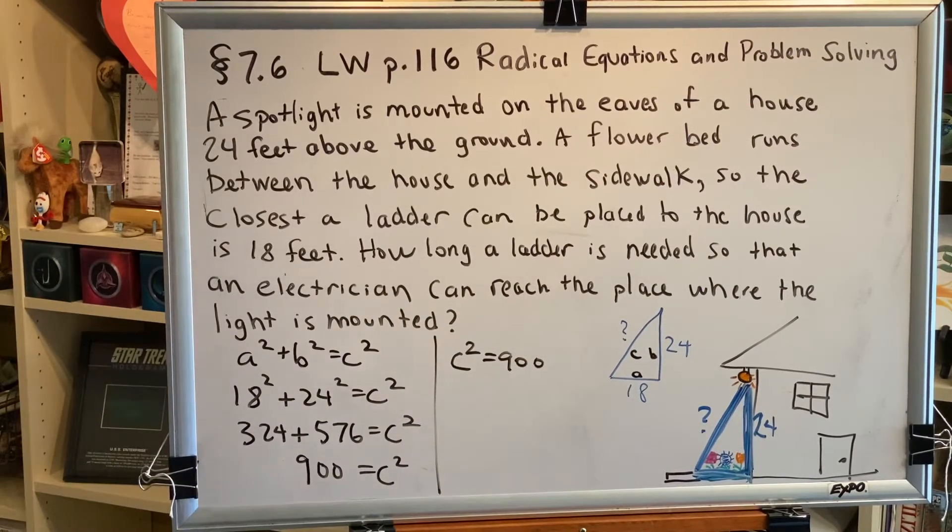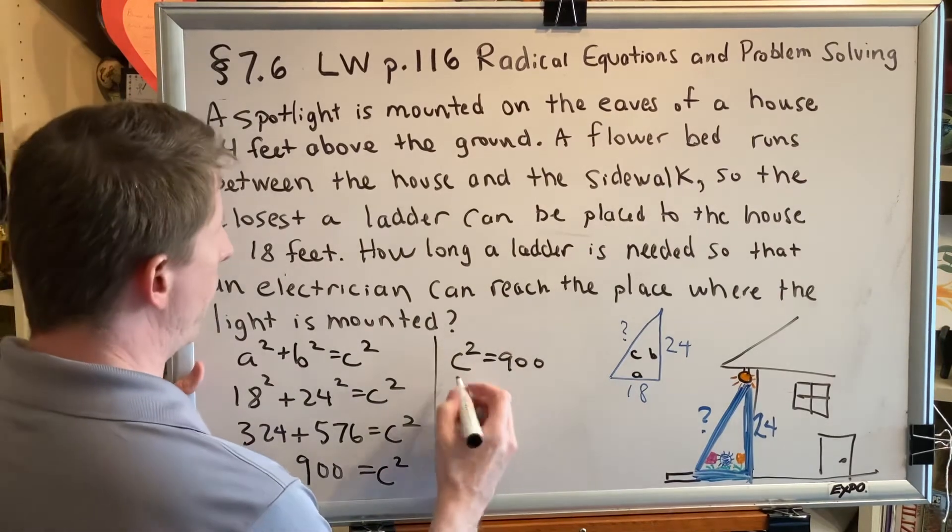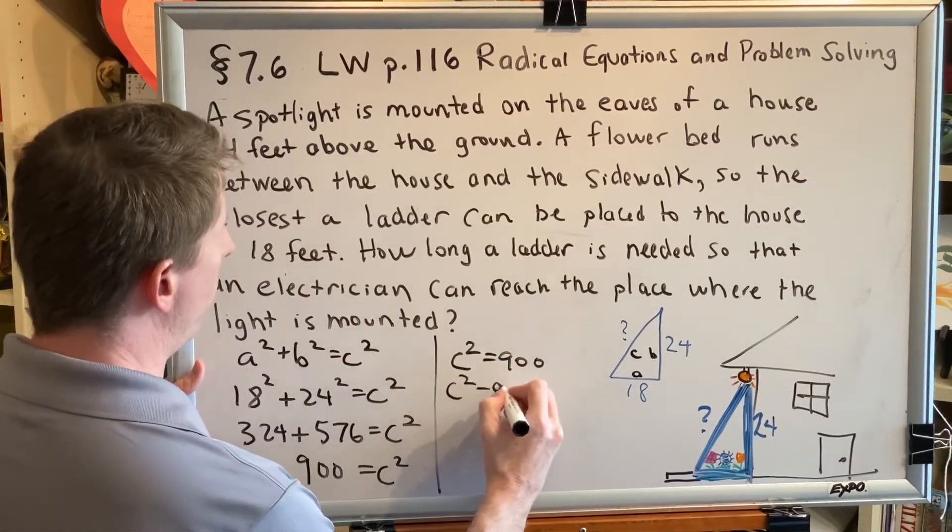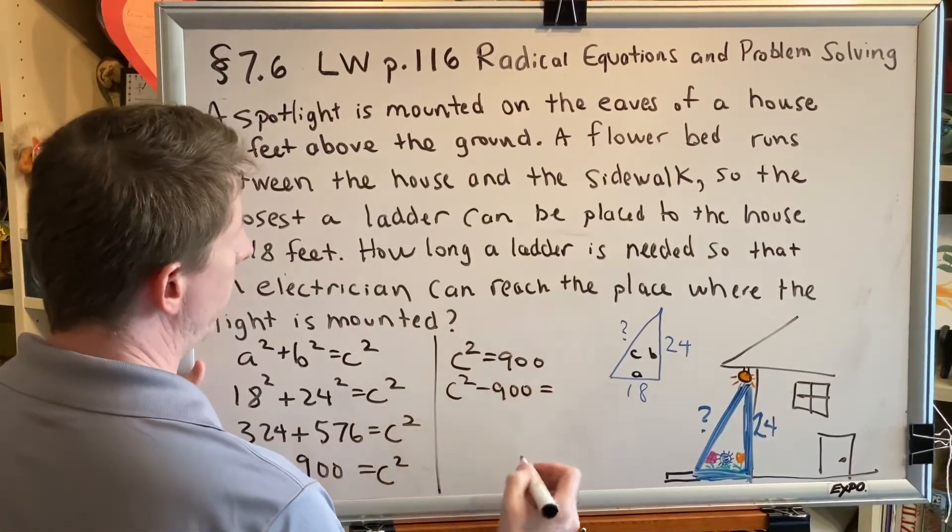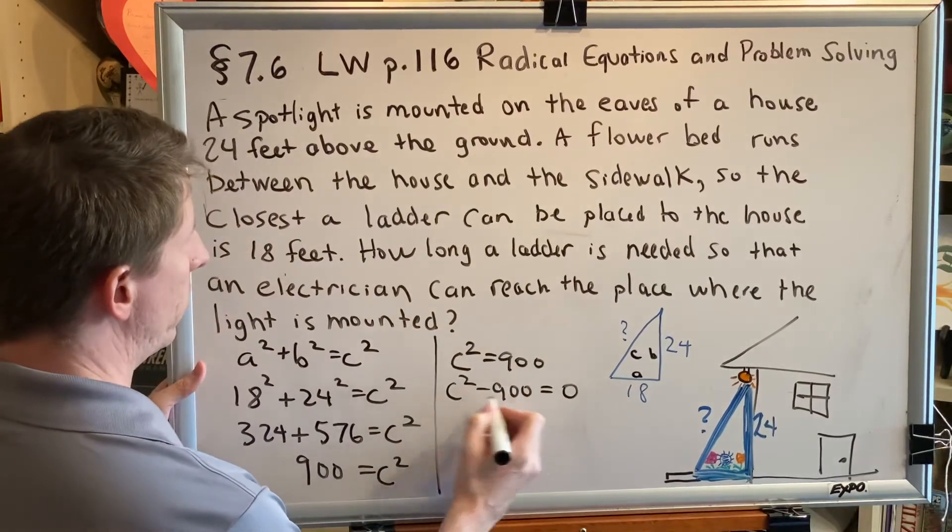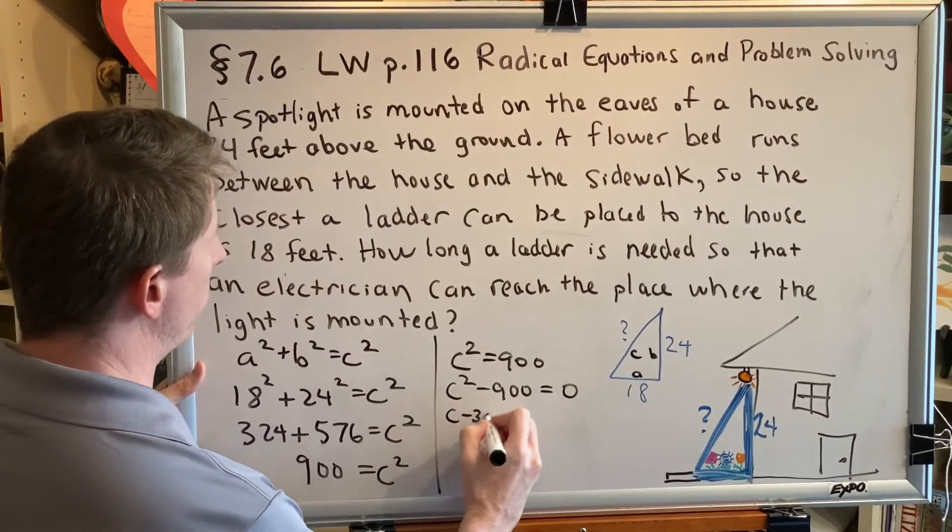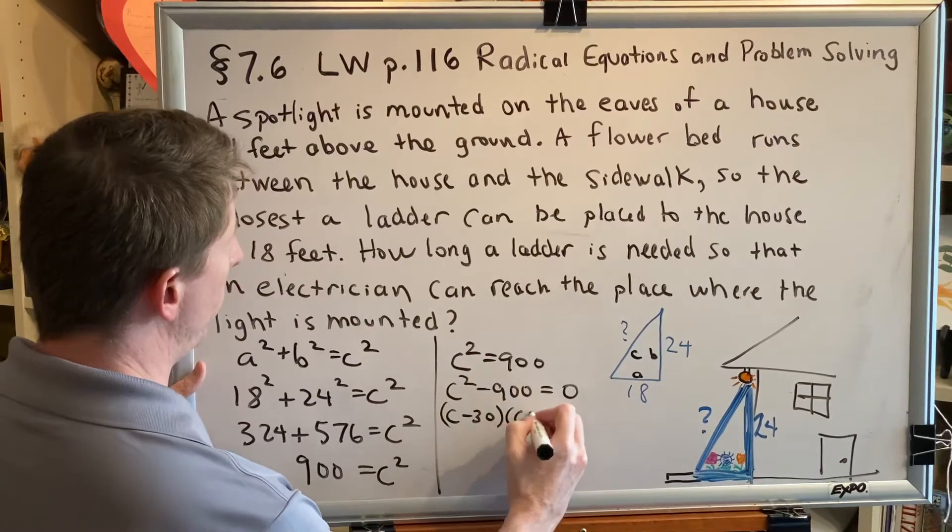We're going to solve this by factoring. We'll move the 900 to the left side: c² - 900 = 0. This is a difference of squares: (c - 30)(c + 30).